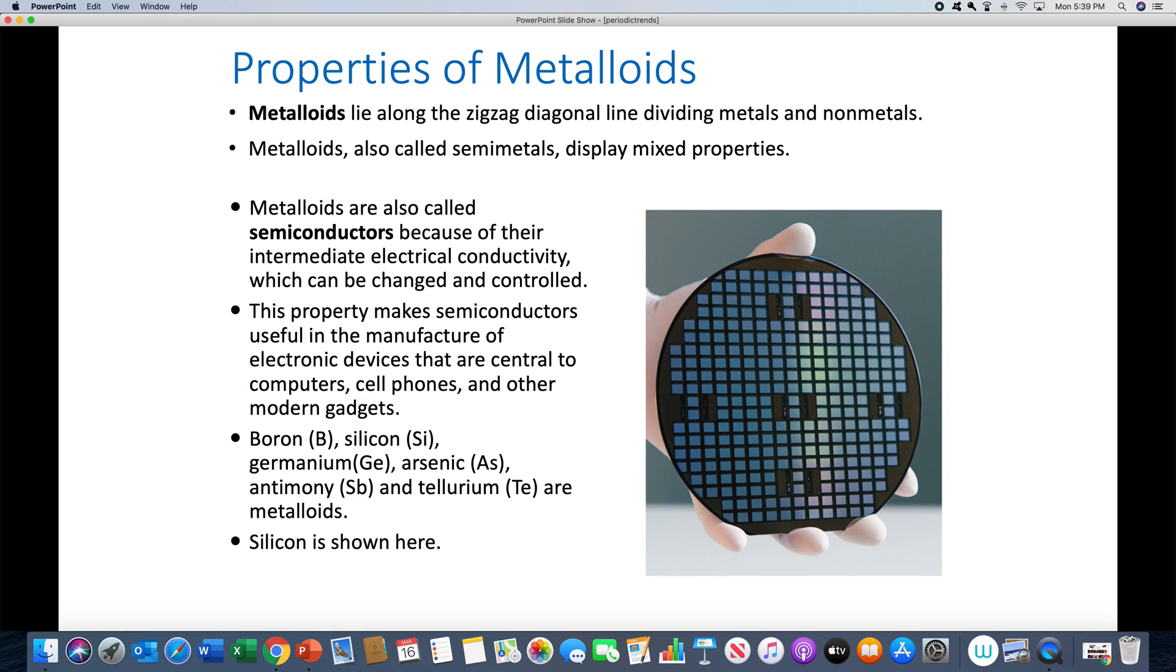Metalloids have intermediate properties that are along the zigzag line. In Britain they call them semi-metals, and they have intermediate properties. One of the most interesting properties is that they're semiconductors, which means they will conduct electricity kind of - really they'll conduct electricity if you heat them up. All right, specifically the metalloids are boron, silicon, germanium, arsenic, antimony, and tellurium. If you look at the periodic table, you'll also notice that aluminum and polonium are on the line, but aluminum is a metal, as is polonium.